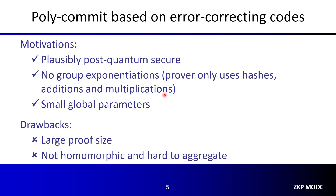In this lecture, we are going to see a new class of polynomial commitment schemes based on error-correcting codes. On the positive side, we are not aware of any efficient algorithm on non-quantum computers to break the assumptions of these schemes, so the schemes are plausibly post-quantum, unlike those based on the discrete log problem. In addition, the prover time tends to be fast because they do not require any group exponentiation. The prover only computes hash functions, Merkle trees, and some field additions, multiplications, and FFT.